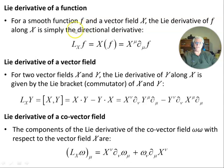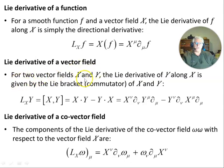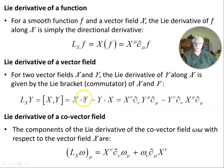For a smooth function f and a vector field X, the Lie derivative of f along X is simply the directional derivative. For two vector fields X and Y, the Lie derivative of Y along X — which is the subject of this video and its diagrams — is given by the Lie bracket commutator of X and Y, which can also be written in component form.